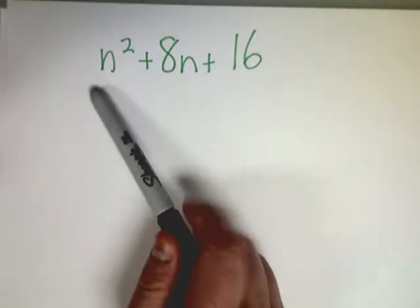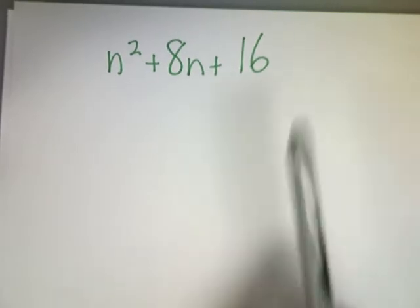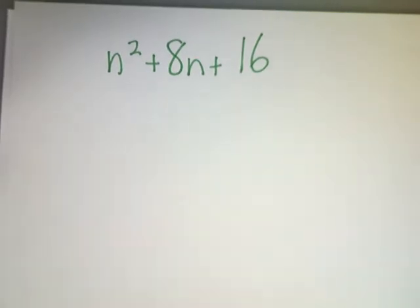If you notice, n squared is a square. Well, 16 is also a square, because 4 times 4 gives you 16.